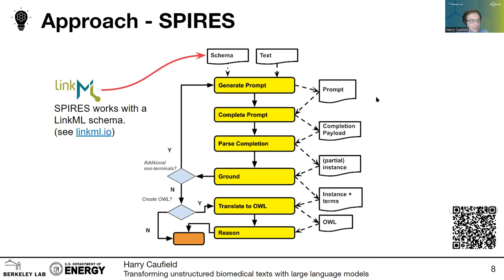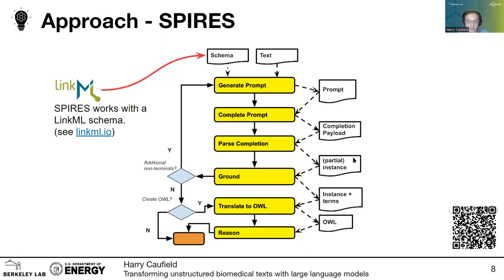More specifically, SPIRES works with a LinkML schema. LinkML allows you to use a pre-structured language to define the kinds of things you expect to model. SPIRES generates a prompt from that schema and the input text, passes it to GPT or another language model for completion, and gets back what we call the raw completion. The individual text fragments are then searched to see if they can be grounded to specific chosen annotators. Where possible, we can also translate the result to OWL and use that for reasoning over an ontology.